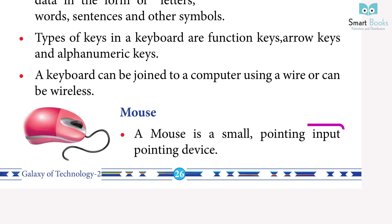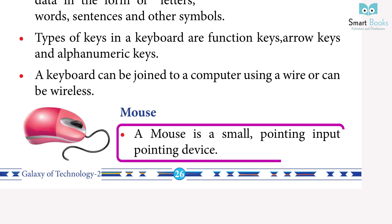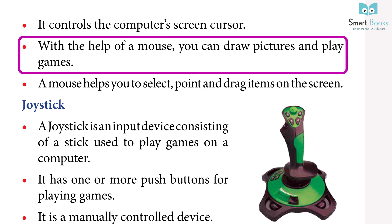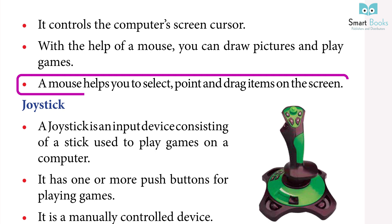Mouse: a mouse is a small input pointing device. It controls the computer's screen cursor. With the help of a mouse, you can draw pictures and play games. A mouse helps you to select, point and drag items on the screen.